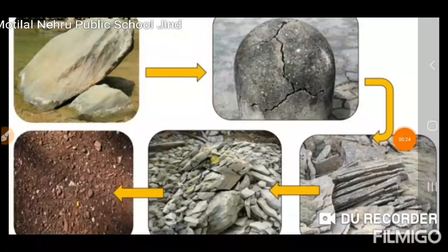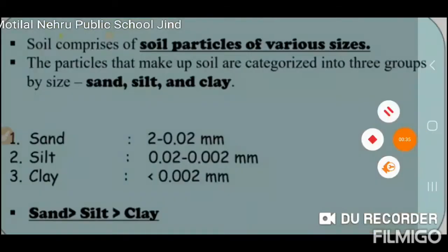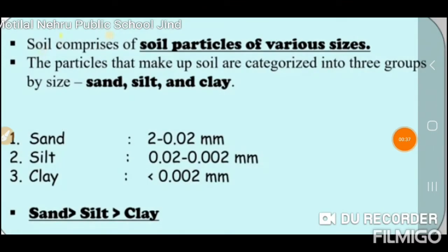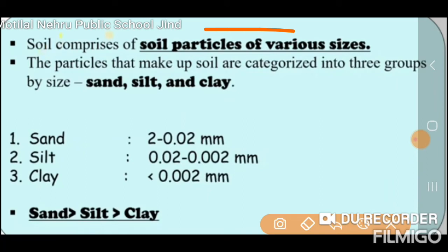As you know, soil is made of different particles. Sometimes in the upper layer it has small fine particles, and it can be divided into different different soils. The soil particle has various sizes, and the particles that make up soil are divided into three groups by their size: sand, silt, and clay.